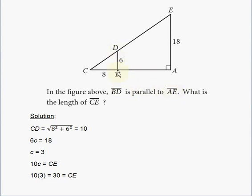If BD is parallel to AE, it means that angle CBD is a right triangle. It's a right angle, 90 degrees, okay? Angle CBD.